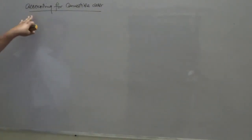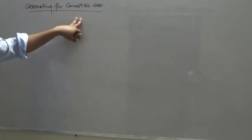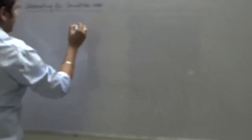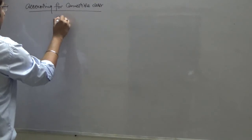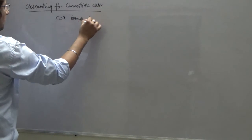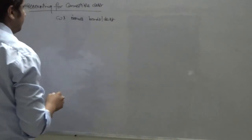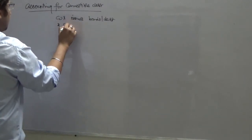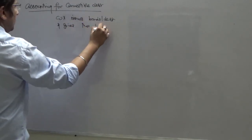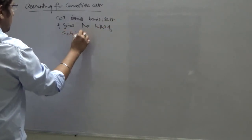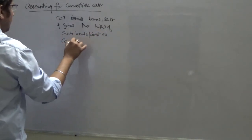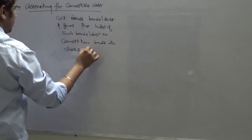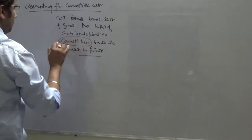Hello everyone and welcome to our discussion today on accounting for convertible debt. We must be aware of what exactly a convertible debt is. A company — let's say company X — issues bonds, debt, or commercial papers and gives the holder of such bonds or debt the option to convert their bonds into shares in the future. That conversion option exists.